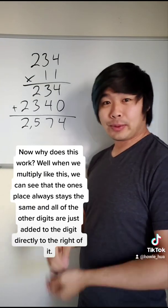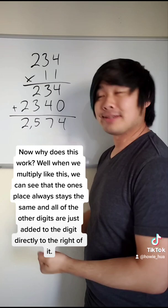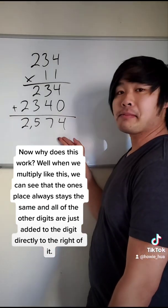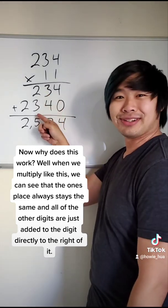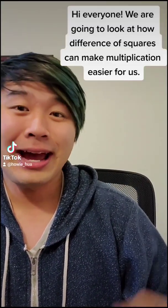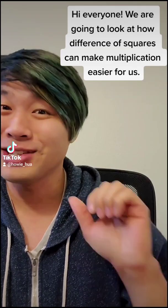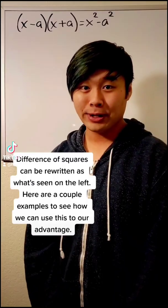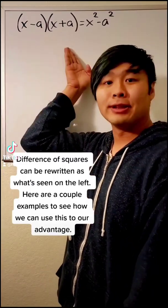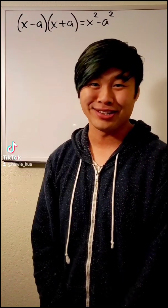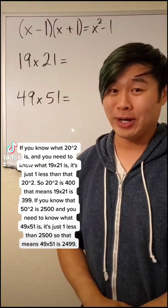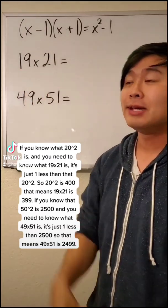Now why does this work? Well, when we multiply like this, we can see that the 1's place always stays the same, and all of the other digits are just added to the digit directly to the right of it.